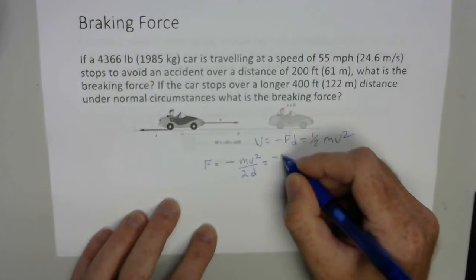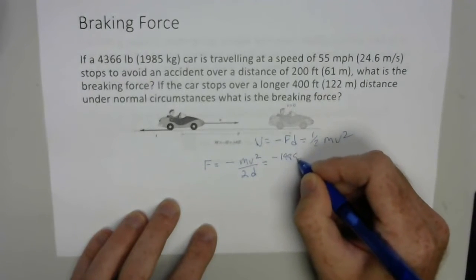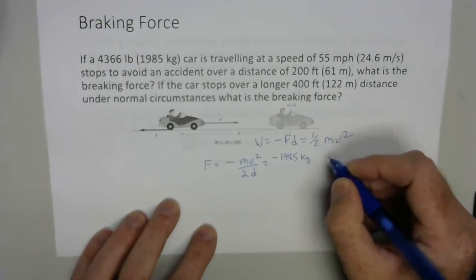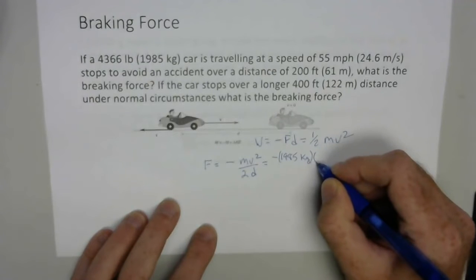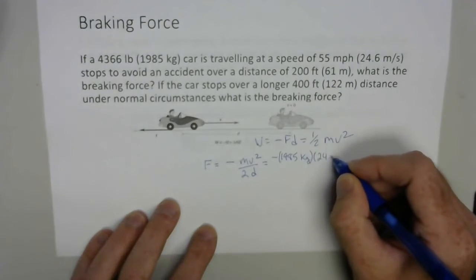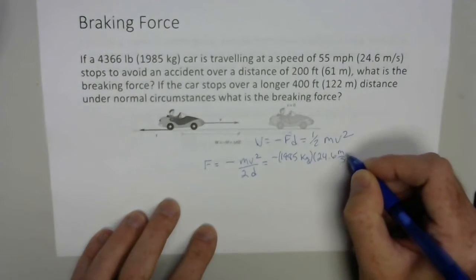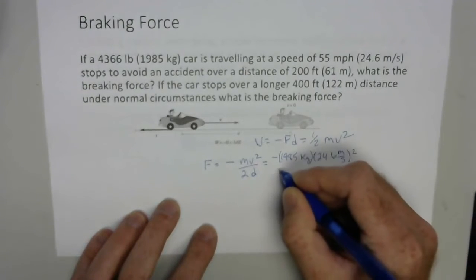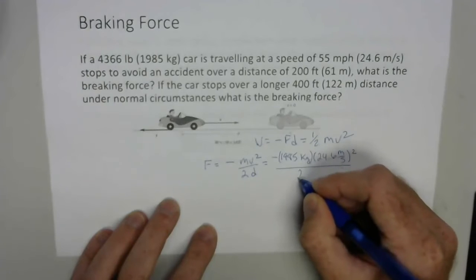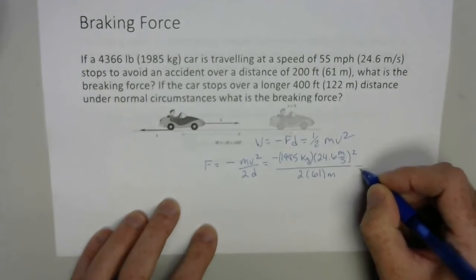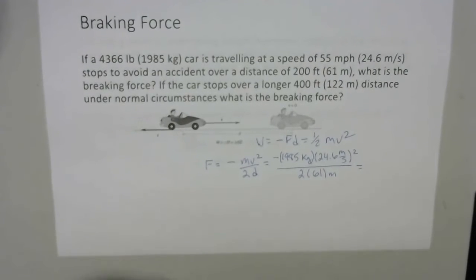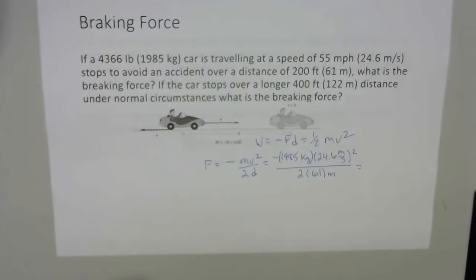You've got a negative 1985 kilograms. And then you're going to multiply that by the velocity, 24.6 meters per second, quantity squared, and then divided by 2 times the distance in our case, 61 meters. And so then our braking force will just be the result of that calculation.